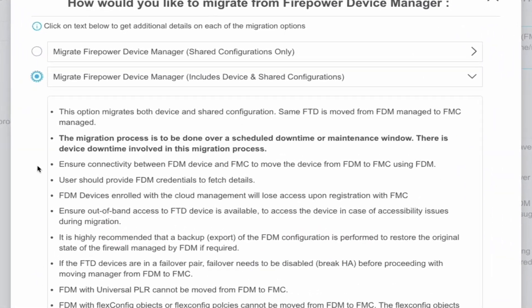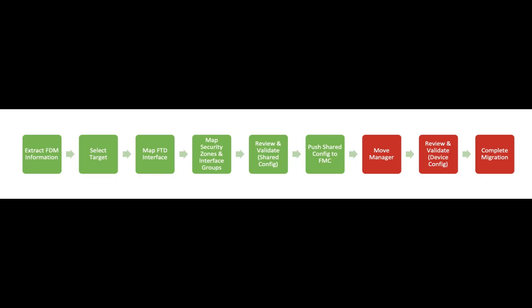The second option includes migration of both shared and device-specific configuration. The flow involves getting the configuration, selecting the target FMC, mapping the interfaces, selecting the security zones and interface groups, validating the changes, and then pushing those configurations onto the FMC. Following this, there will be a requirement for a maintenance window for moving the manager from a locally managed FTD to one managed by FMC — which includes moving the manager, validating the changes, and adding the device to FMC.